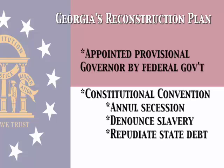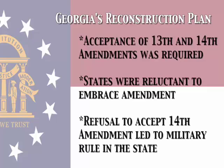Lincoln and Johnson's path for reconstruction was very lenient and Georgia began down the path. They had to accept an appointed provisional governor. They had to call a constitutional convention at which they would annul secession, denounce slavery, and repudiate state debt. The acceptance of the 13th Amendment, which abolished slavery, and the 14th Amendment, which guaranteed equality and civil rights for all, including former slaves, also must be embraced by the state.